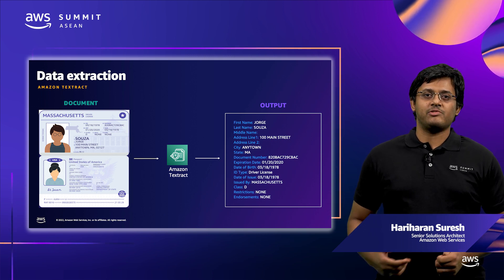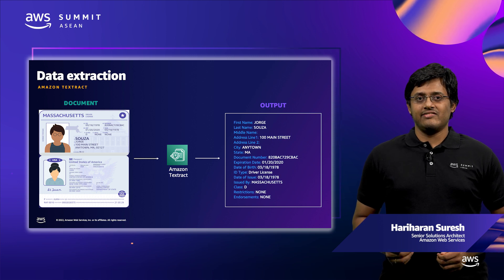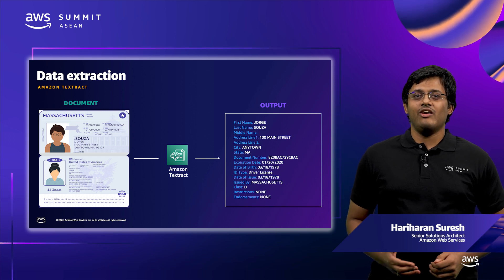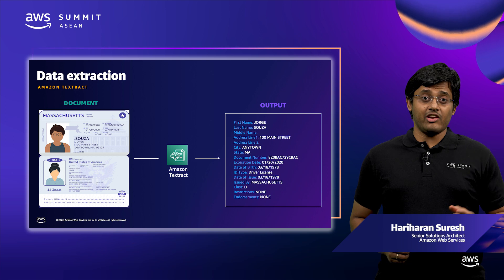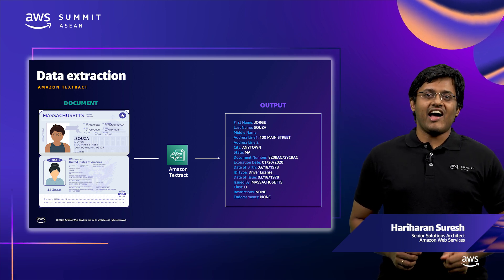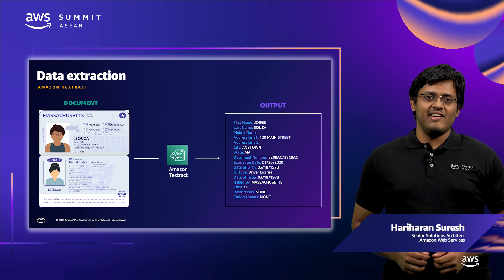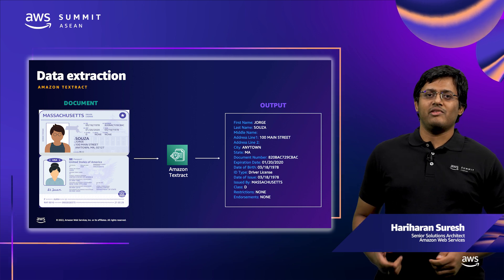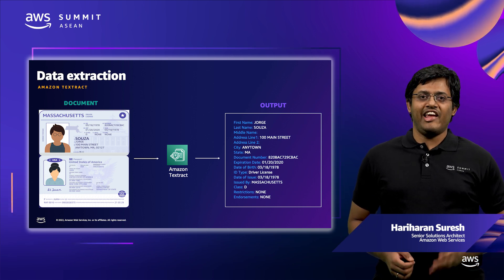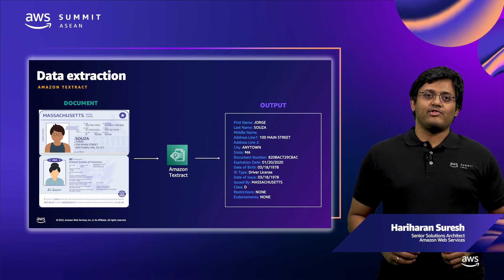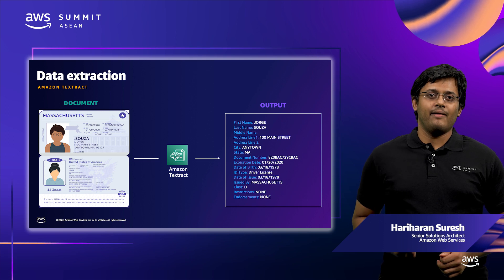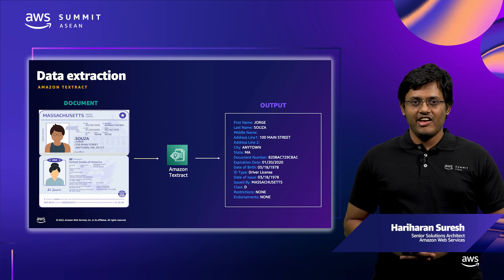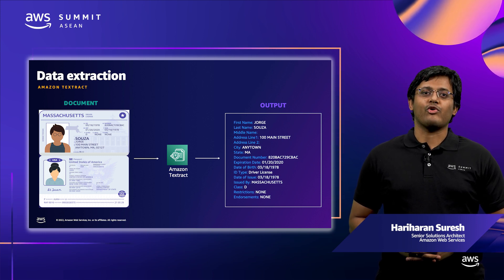Amazon Textract helps with OCR and data extraction. This service is powered by deep learning neural network models, giving it high-accuracy optical character recognition outputs. It can also detect forms, tables, and other document layout characteristics. The Textract Analyze ID API is used to extract data from identity documents like state-issued IDs without the need for any templating or configurations. Textract supports input formats of JPEG, PNG, TIFF, and PDF. If you have documents in other formats, you can convert them to a supported format before calling the Textract service.